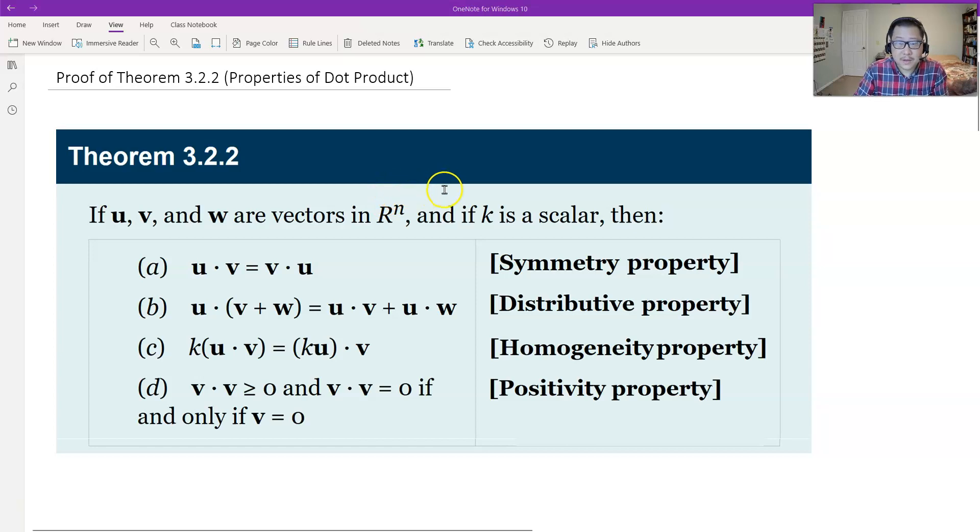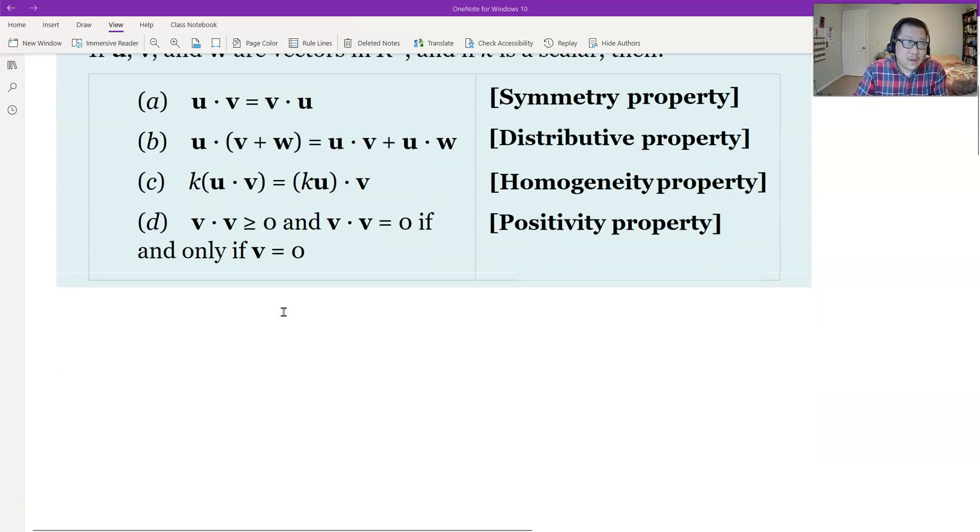So the first is commutative, or we say symmetry property. The second is distributive. And the third is homogeneity, like a linear property, and the coefficient can be factored out from the dot product. And the last one is we call it non-negative, or positivity properties. The dot product of the vector itself is non-negative. If the dot product is zero, if and only if equivalent to the vector is zero vector. Let's see how to prove it in n-space.